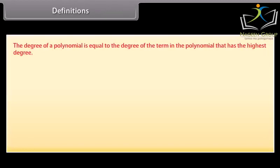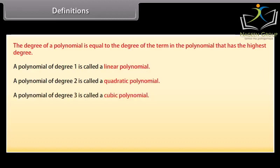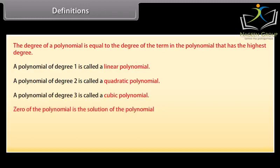Definitions: The degree of a polynomial is equal to the degree of the term in the polynomial that has the highest degree. A polynomial of degree 1 is called a linear polynomial. A polynomial of degree 2 is called a quadratic polynomial. A polynomial of degree 3 is called a cubic polynomial. Zero of the polynomial is the solution of the polynomial.